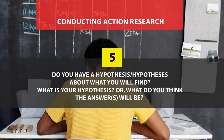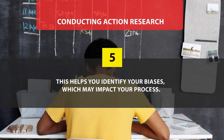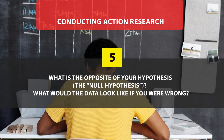When analyzing your research problem and trying to find probable solutions, you frame certain hypotheses. Do you have a hypothesis about what you will find? What do you think the answer will be? Thinking about these tentative answers also helps you identify your biases which may impact your process. What is the opposite of your hypothesis? What will happen if you are wrong? What kind of data will you get if you are wrong? These things need to be discussed in your action research proposal.